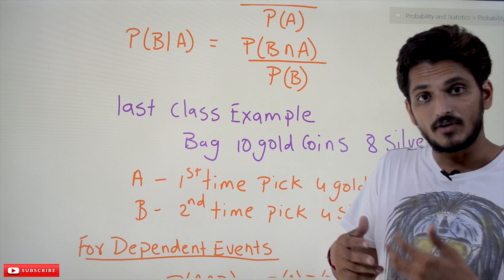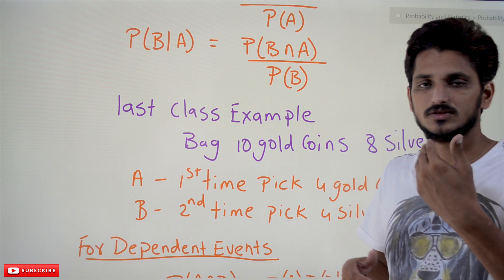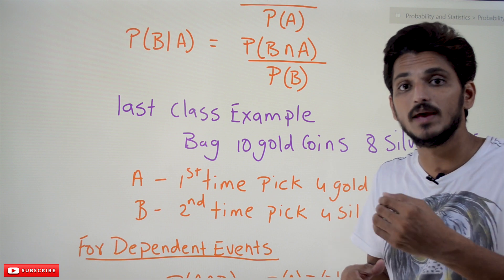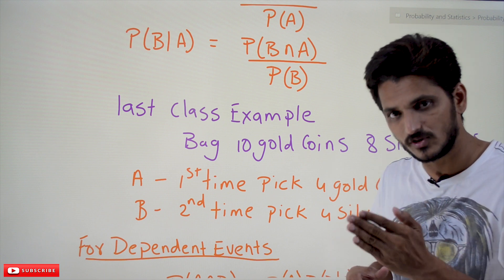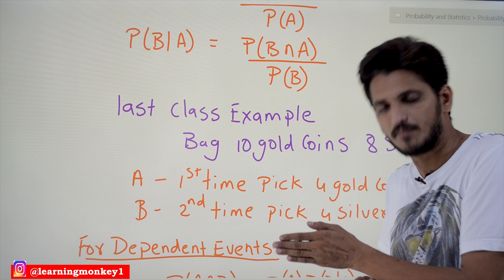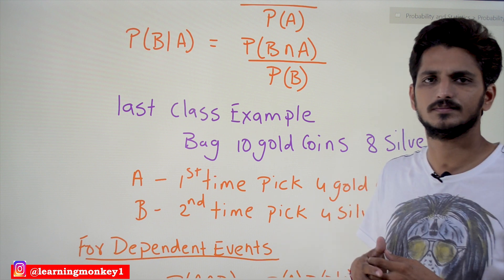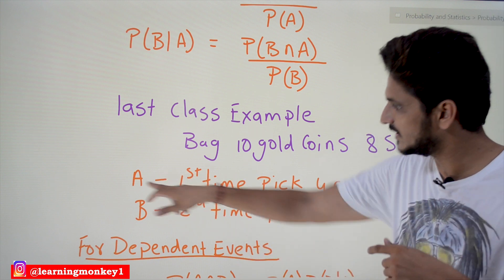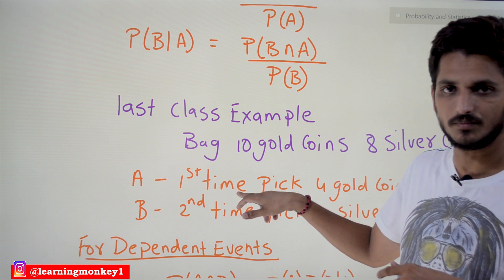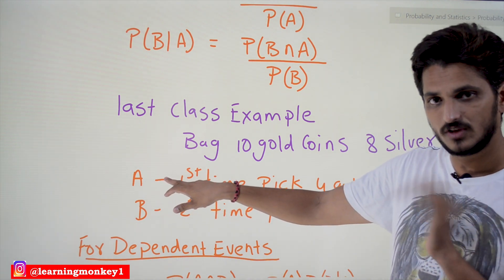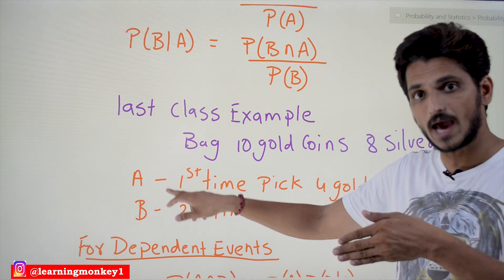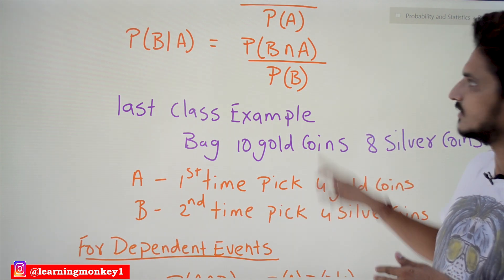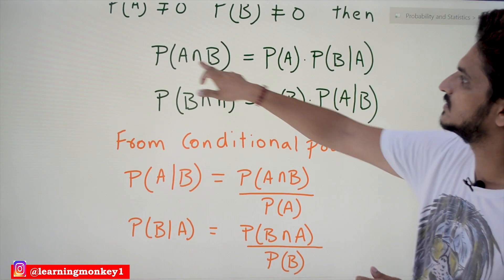The probability of both events occurring is given by the multiplication rule: P(A) followed by P(B|A). Here, A is the first attempt — we find P(A), and then, given that A has happened, we find the probability that B is going to happen. That is exactly what the multiplication equation represents.